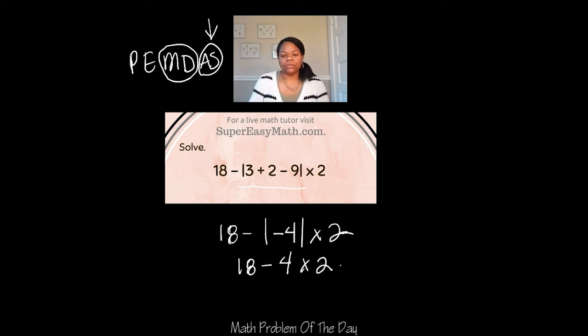Now I need to still continue to use PEMDAS, and I know I need to deal with multiplication before subtraction. So I need to multiply my 4 times 2, and I get 8. And so now the problem is 18 minus 8, which gives you 10. So 10 is the answer to today's math problem of the day.